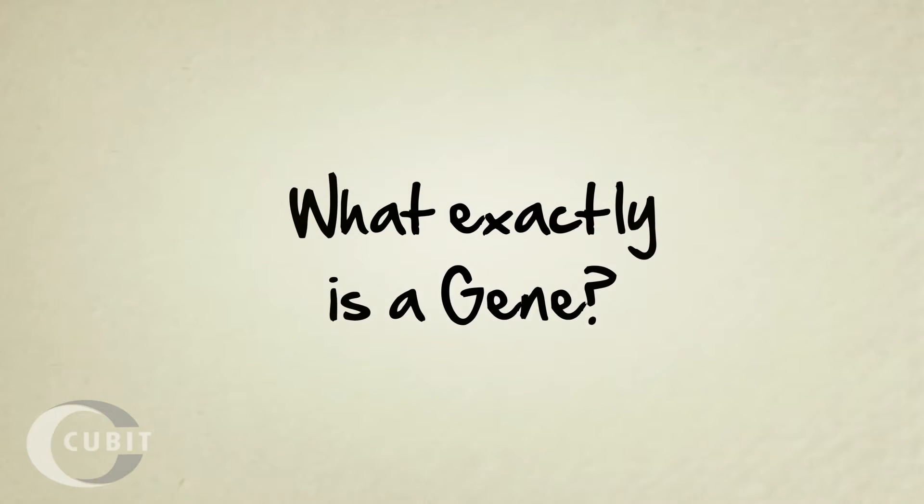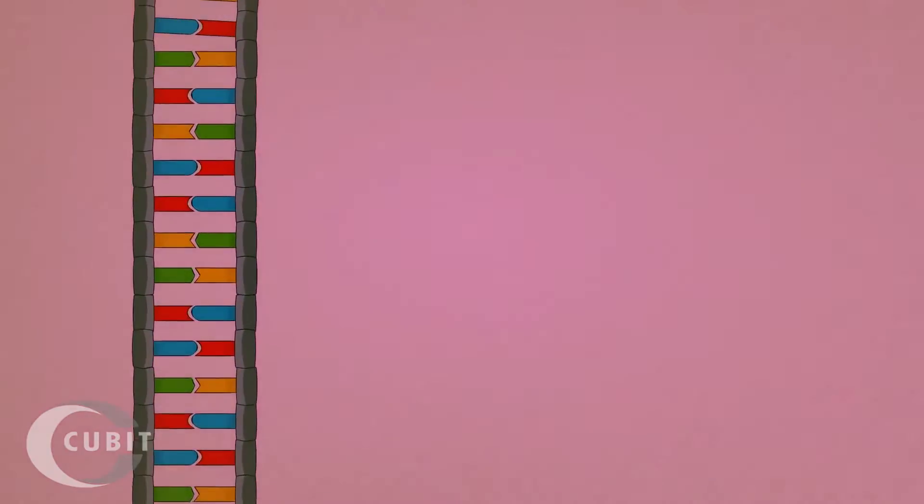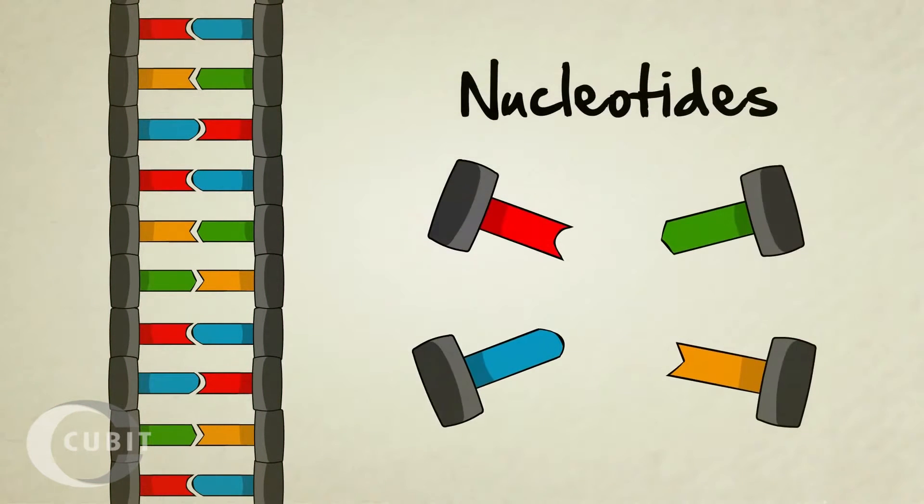What exactly is a gene? Each one of our cells contains 46 strands of DNA. A single strand is made of millions of particles called nucleotides, and these nucleotides come in four different types, which scientists have labeled A, C, T, and G.